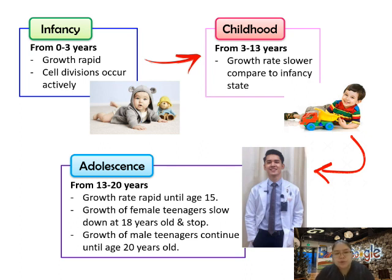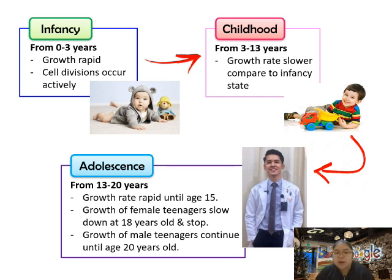Adolescence is from thirteen to twenty years old — from secondary school through university. Growth is rapid until about fifteen. Growth of female teenagers will slow down at eighteen years old and stop. So during secondary school you'll notice girls are taller than boys because females mature faster. After eighteen the female growth stops, while males continue until about twenty years old.